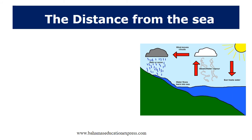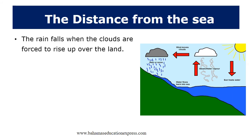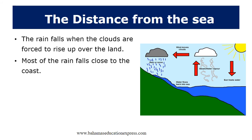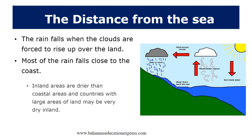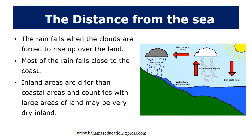The distance from the sea: Rain falls when the clouds are forced to rise up over the land. Most of the rain falls close to the coast. Inland areas are drier than coastal areas, and countries with large areas of land may be very dry inland.